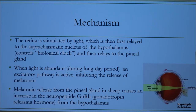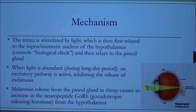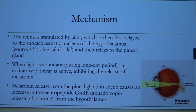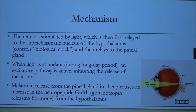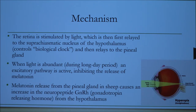The mechanism of their breeding: essentially the retina is stimulated by light during the day when the animal is exposed to light, and then it's relayed to an area in the hypothalamus that is known to control the biological clock of the animal. That signal is then relayed back to the pineal gland. When light is abundant during the long-day period, there is an excitatory pathway that's active, and it inhibits the release of melatonin in the sheep's brain. During the short-day period, melatonin can be released in sheep, and then it causes the release of GnRH, or gonadotropin-releasing hormone, from the hypothalamus.